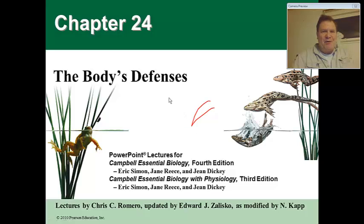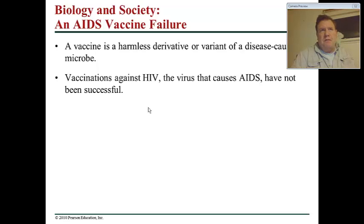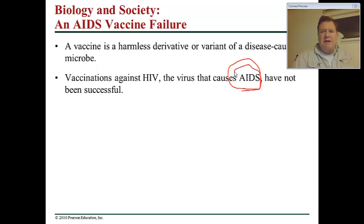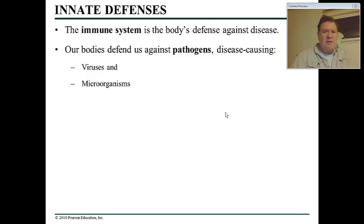Hello, this is Nick Capp and I am going to go through chapter number 24 looking at a typical mammalian immune system. Biology and society have been going together for a long time, and one of the big things recently is that our technology of vaccination has really kind of failed us in terms of looking at HIV. Hopefully we'll get to talk a little bit about why that happens and why finding a cure for AIDS turned out to be more complex than we first thought.